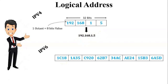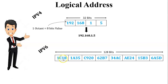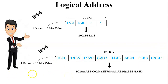Now let us see the example of IPv6. IPv6 is written in hexadecimal values. The size of IPv6 is 128 bits. When you convert the hexadecimal value into binary it stores 16 bits per octet. One octet is equal to 16 bits, and there are 8 octets, so 16 × 8 gives 128 bits. This is the representation of IPv6.